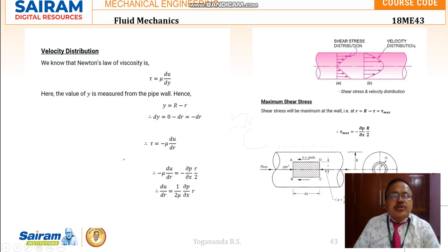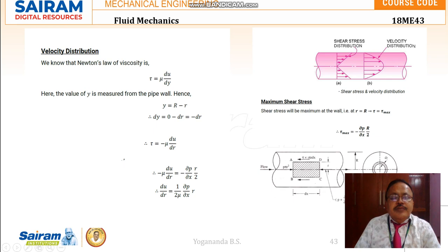Coming to velocity distribution. Newton's law of viscosity says tau = mu · (du/dy), where y is measured from the wall of the pipe. If capital R is the radius of the pipe and small r is the radius of the fluid element, the distance of the fluid element from the pipe wall is y = R - r. Differentiating, since capital R is constant, dy = -dr.